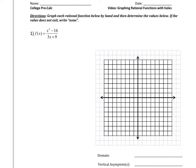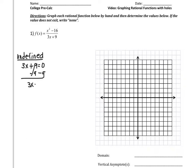So what we're going to do first is we're going to do everything that we've normally done with rational functions. The first thing is to find the undefined values. Undefined is when the denominator is set equal to 0. So 3x plus 9 equals 0, minus 9. 3x equals negative 9, divide by 3, and x is equal to negative 3.